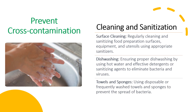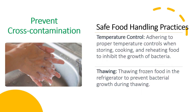Maintaining a clean and sanitized environment is vital for preventing cross-contamination. Regularly clean and sanitize food preparation surfaces, equipment, and utensils using appropriate sanitizers. Ensure proper dishwashing by using hot water and effective detergents or sanitizing agents to eliminate bacteria and viruses. Use disposable or frequently washed towels and sponges. Proper food handling techniques are also essential: adhere to proper temperature controls when storing, cooking, and reheating food, and thaw frozen food in the refrigerator to prevent bacterial growth during thawing.